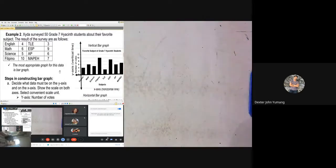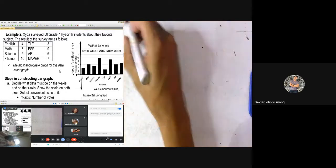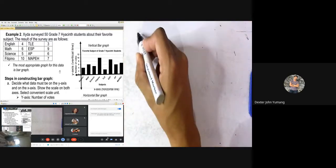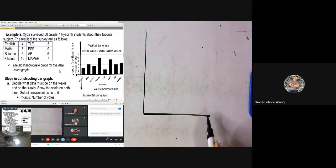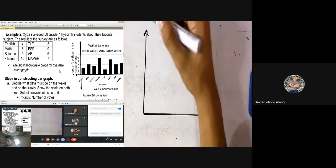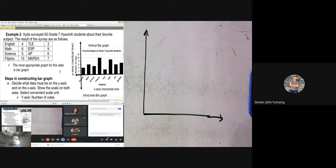So first you are going to make an X and Y axis. We have the Y axis, the X axis. So what is the largest number based on this? Look at the given: 4, 6, 10, 5, 3, 9, 6, 7. What is the largest number? 10. So we have 10 as our greatest number.